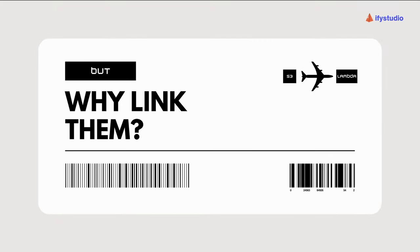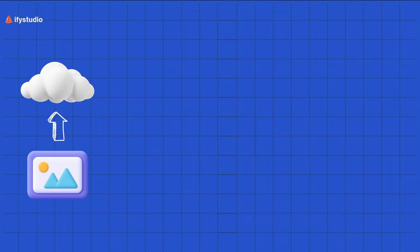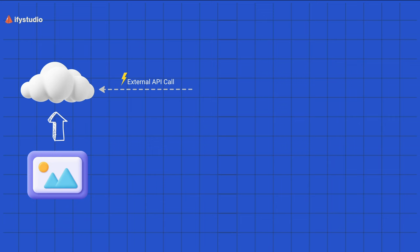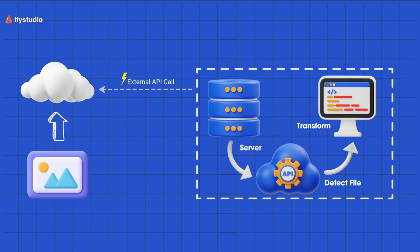But first — why link them? Why are we making a video connecting S3 and Lambda? It all boils down to understanding how you grasp the topic. Let's imagine you want to upload a photograph to the cloud. If there were no services like S3 or Lambda available, you'd have to write an external API call, set up a whole server to monitor the storage, detect when a file is uploaded, and then run code on that server for post-processing. That's a lot of work.